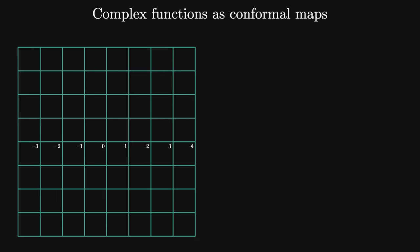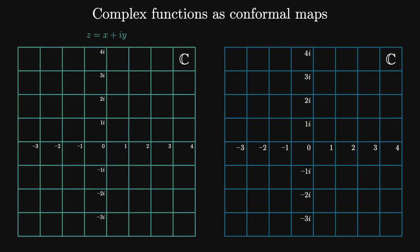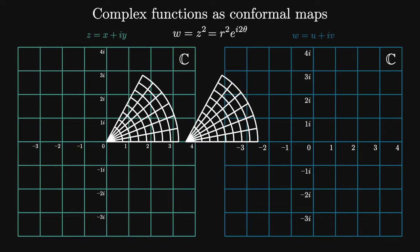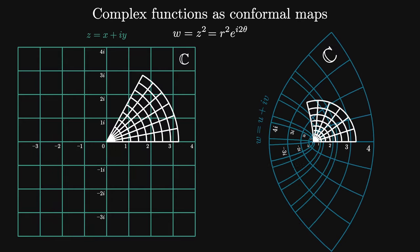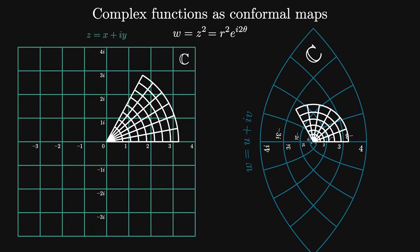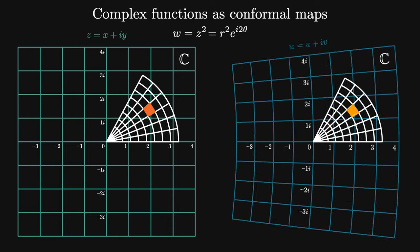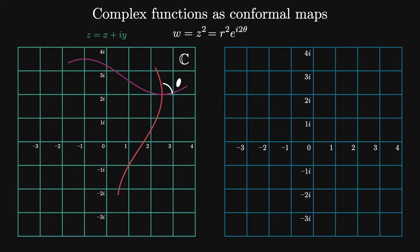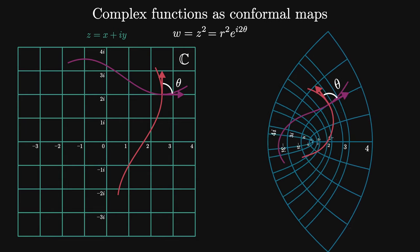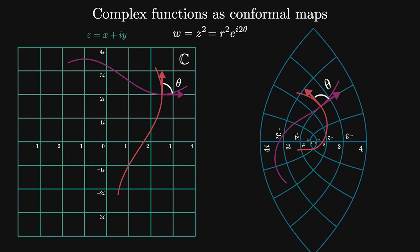In the first video in this series, we looked at complex functions as maps from the complex plane to the complex plane. Here is an example of the map z goes to z squared. We can show that under this map, squares get mapped to squares — visible in both the Cartesian and polar representations. One fact about this map that isn't completely obvious is that both the initial square and its image have 90-degree angles at all of their corners. Instead of squares, consider a pair of curves. If they form an angle theta at their intersection initially, they will form the same angle under the map z goes to z squared, despite the fact that the polar angle theta gets mapped to 2 theta.